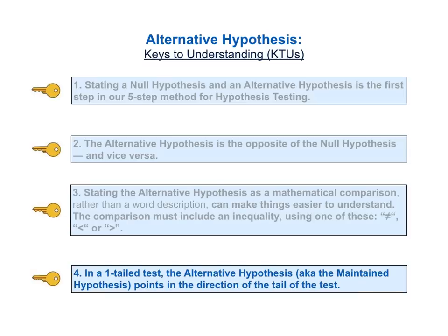The fourth and final key to understanding is, in a one-tailed test, the alternative hypothesis, also known as the maintained hypothesis, tells you in which direction, right or left, the tail points.